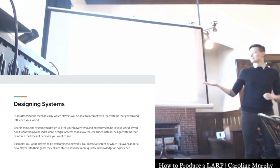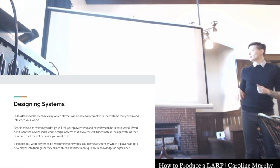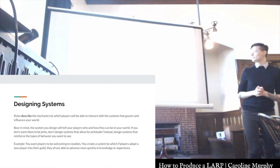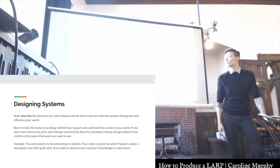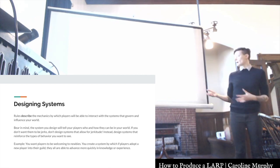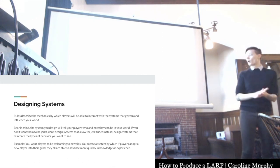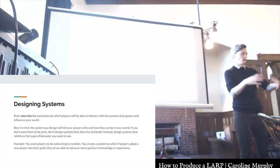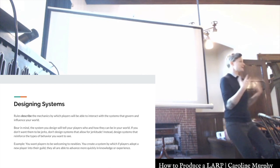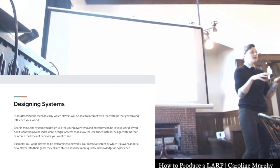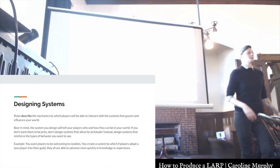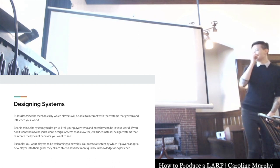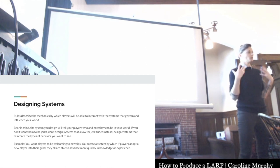Rules describe mechanics by which players are able to interact with the systems that govern and influence your world. The system you design will tell your players who and how they can be in your world. If you don't want them to be jerks, don't design systems that allow for jerky behavior — just take those parts out. Design systems that reinforce the types of behavior you want to see. For example, if you want players to be welcoming to newbies, create a system where players who adopt a new player into their guild all advance more quickly in knowledge. Now a newbie comes in and suddenly everyone is competing to be welcoming and friendly.